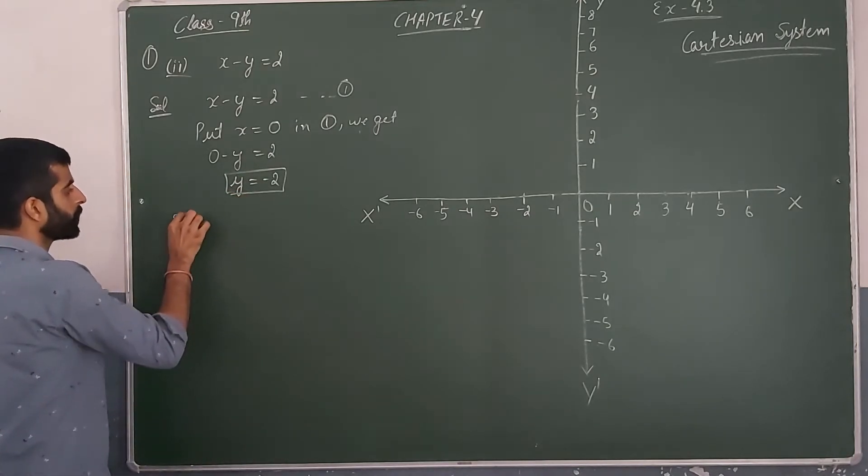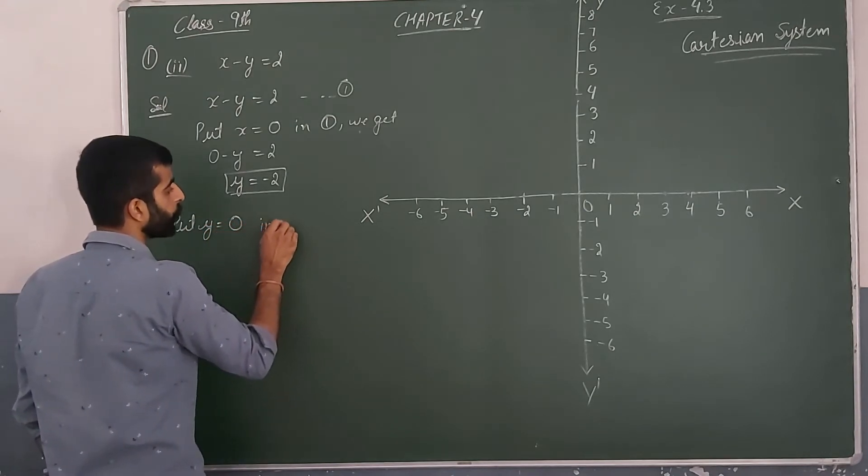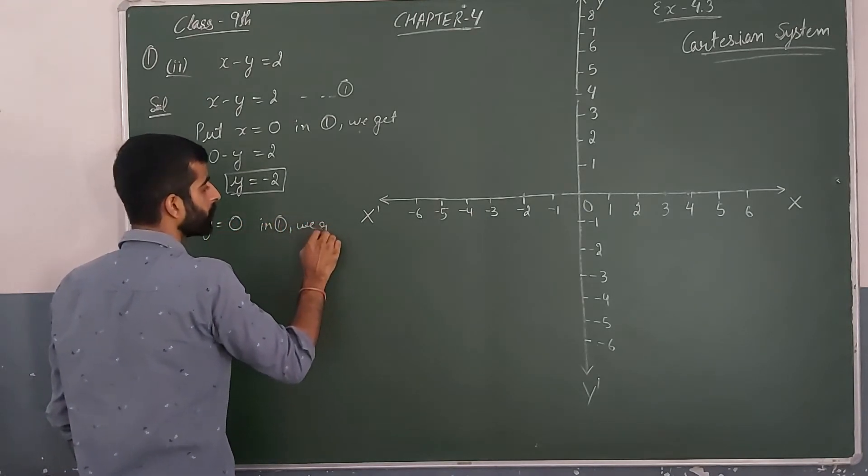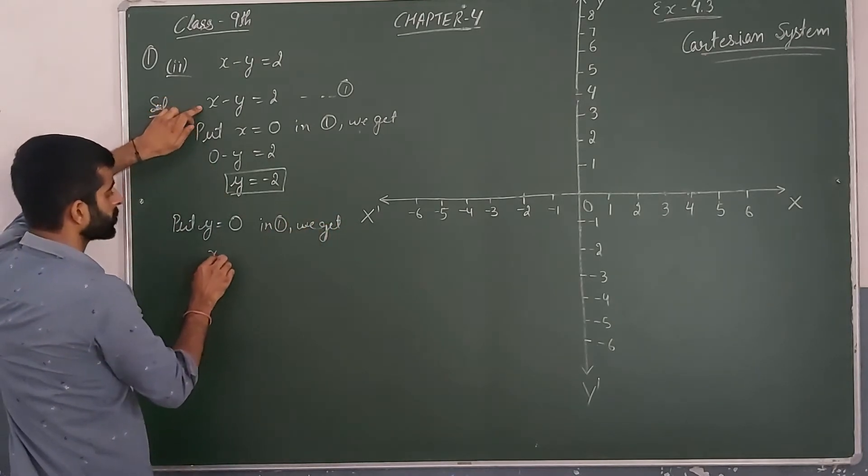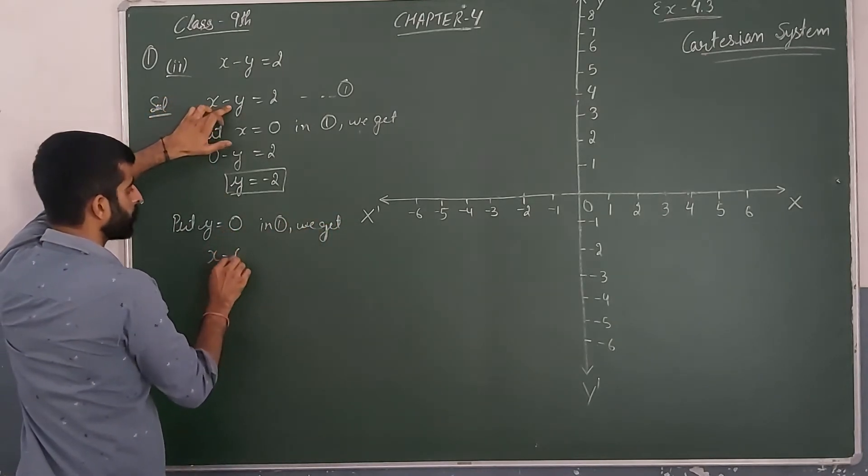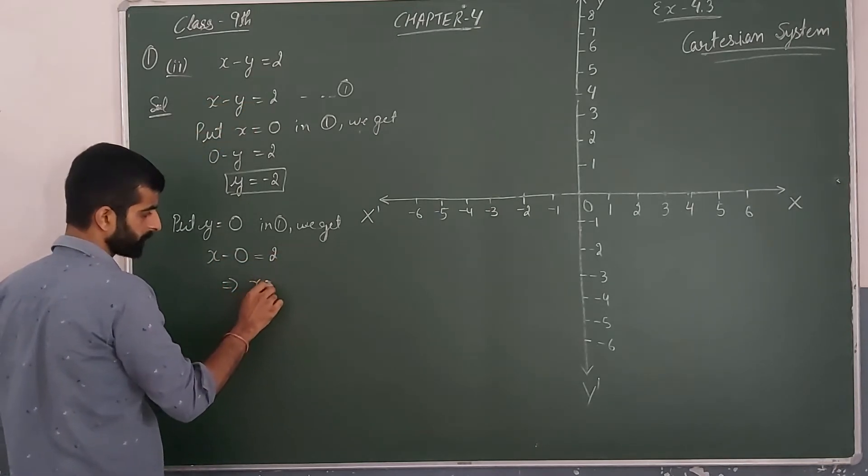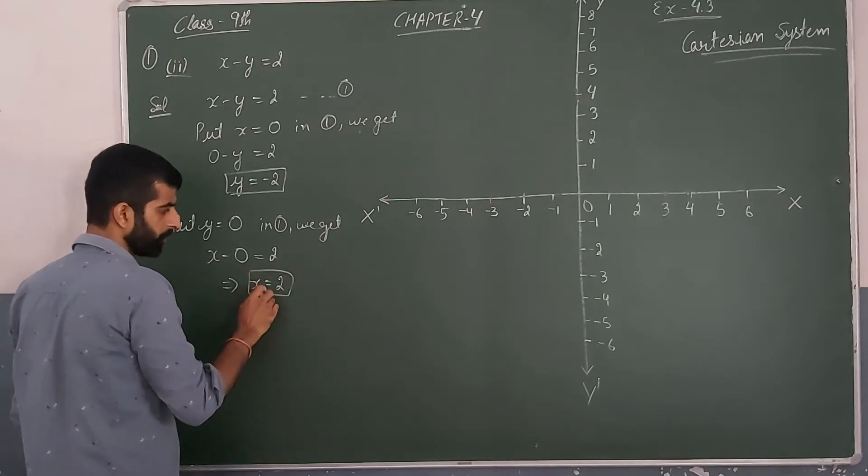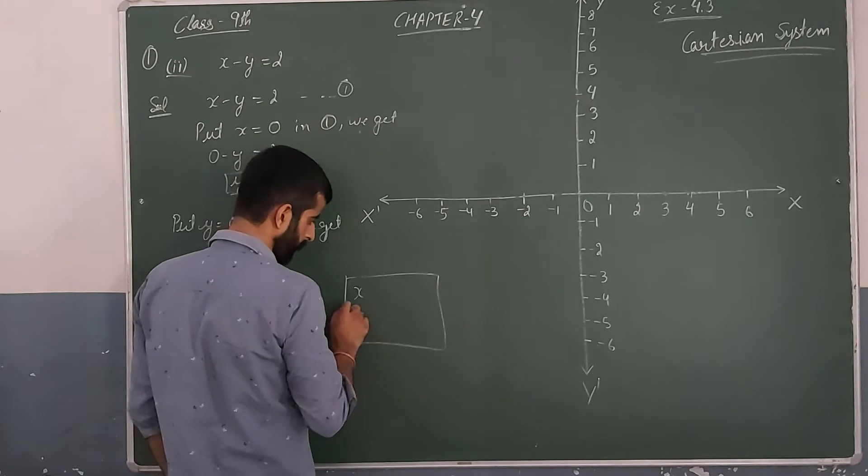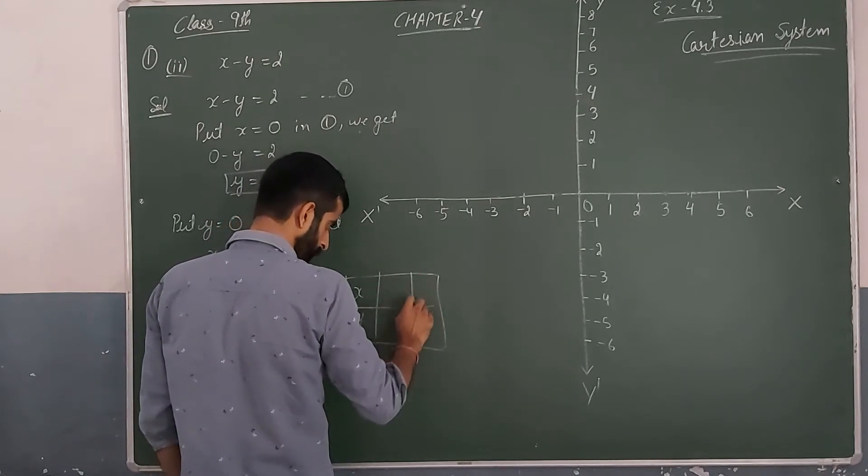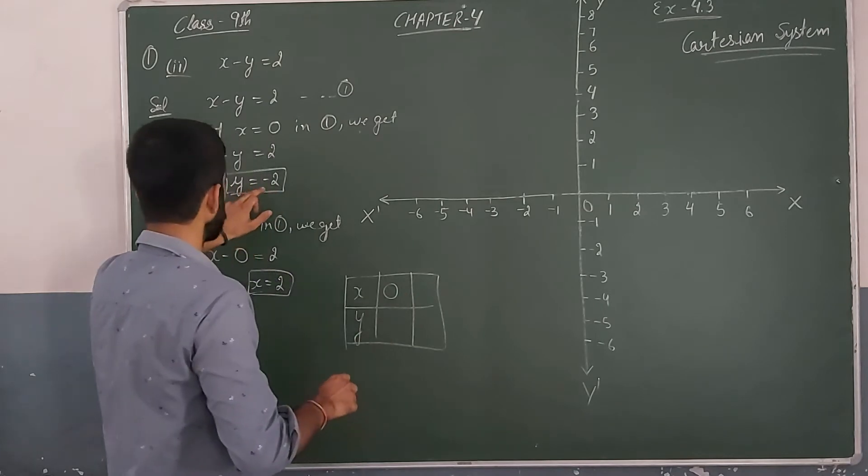Similarly, you can put y is equal to 0 in equation 1. We get x equals 2. It means we get the point where x is equal to 2 and y is equal to 0.